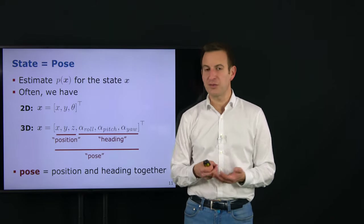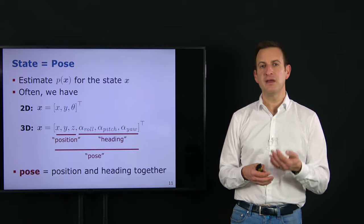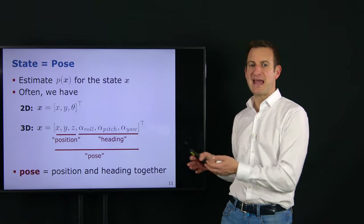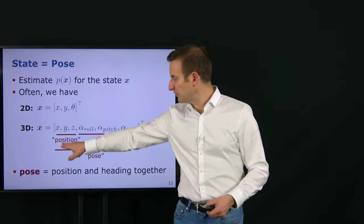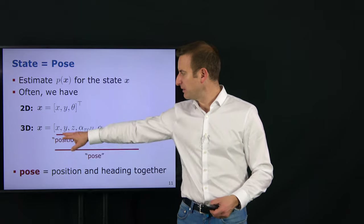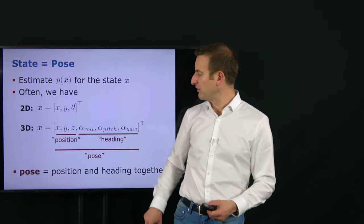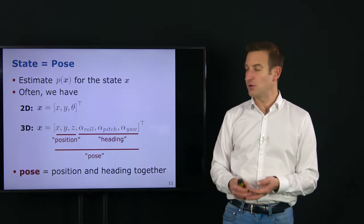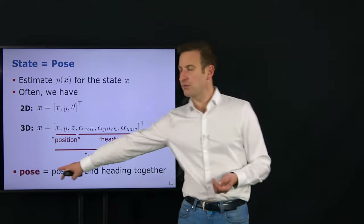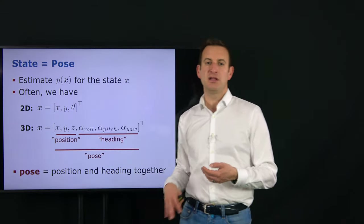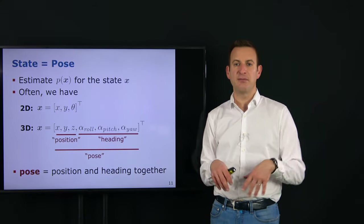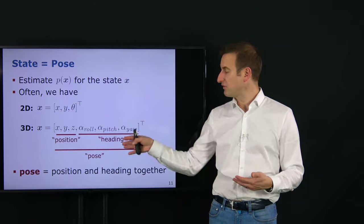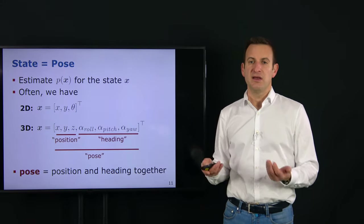The word 'pose' is used frequently here. Pose describes position and heading information together. The position information would be X, Y, Z and the heading would be roll, pitch, and yaw. So if you hear the word pose, it typically means position and heading information combined. That's the quantity we want to estimate.